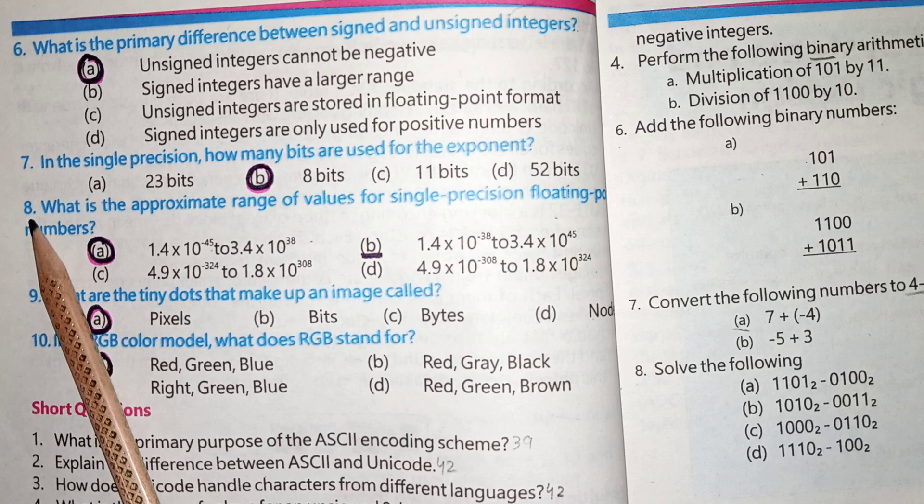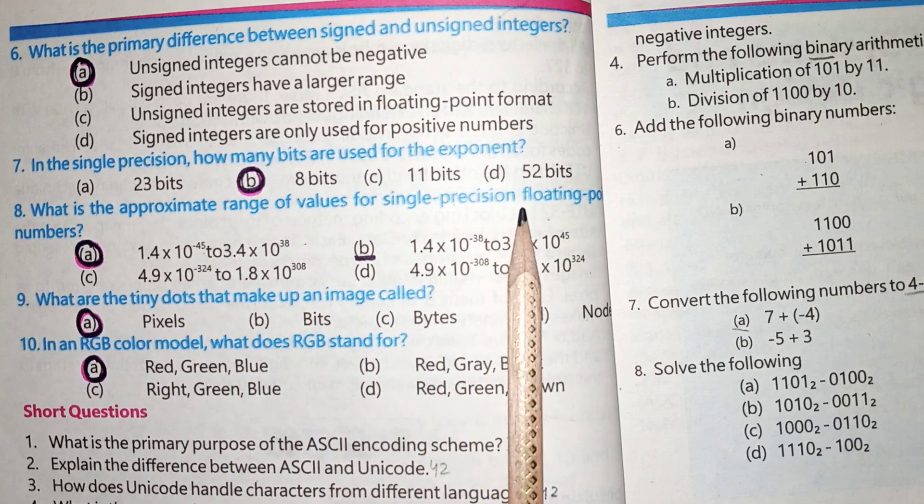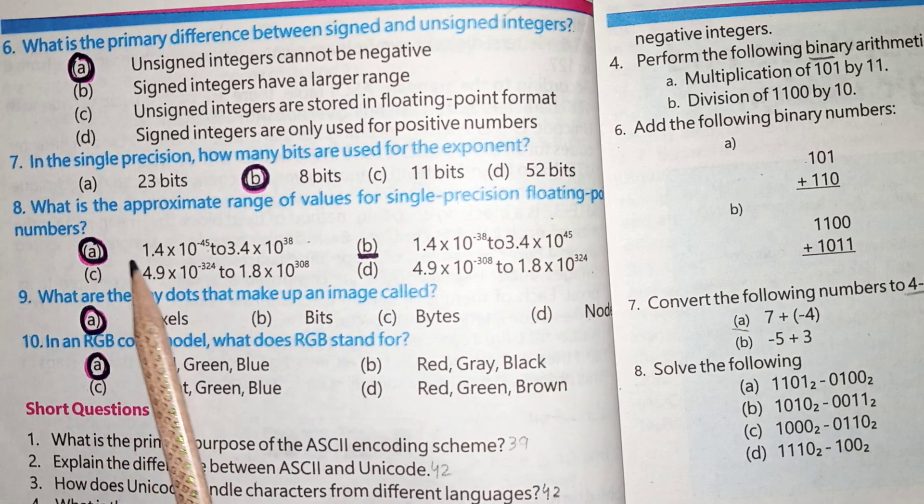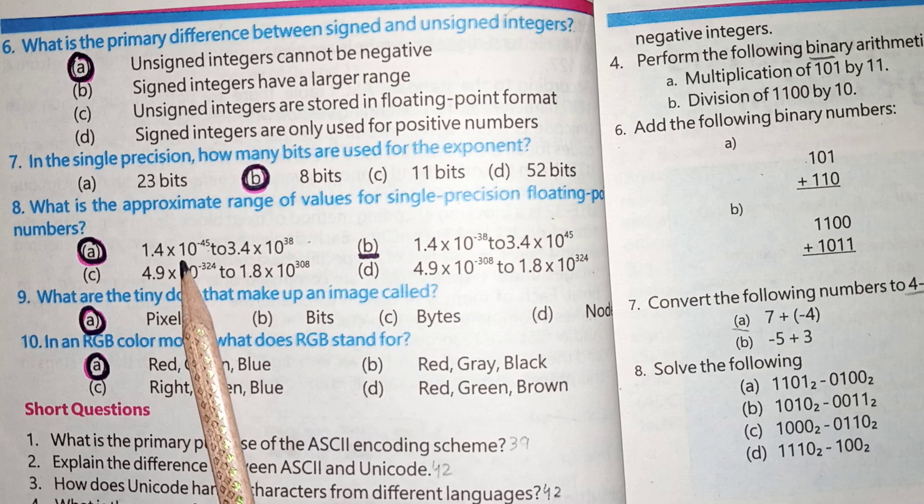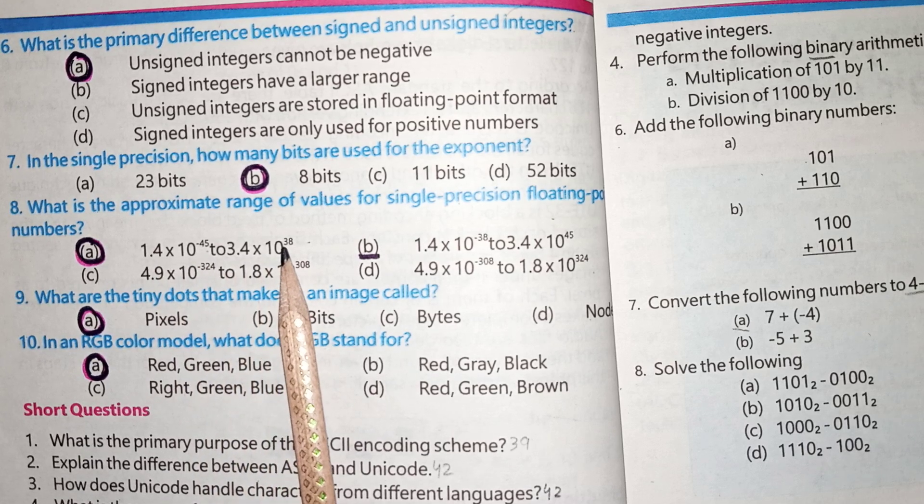Next is, MCQs No. 8, What is the approximate range of value for the single precision floating point numbers? A is the correct answer, 1.4 x 10 power minus 45 to 3.4 x 10 power 38.